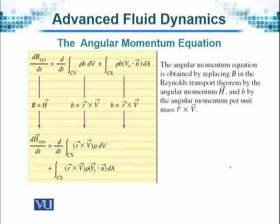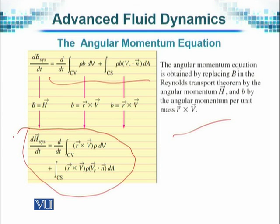The angular momentum equation is obtained by replacing B in the Reynolds transport theorem that we discussed some time ago by the angular momentum H, and by small b by the angular momentum per unit mass R cross V. You can see this is the equation from Reynolds transport theorem, and there we made these changes as we just mentioned, and we obtain this equation, which is the angular momentum equation derived from Reynolds transport theorem.